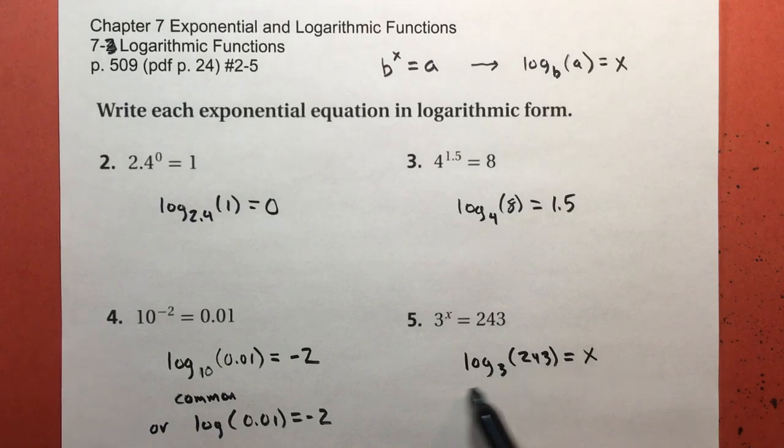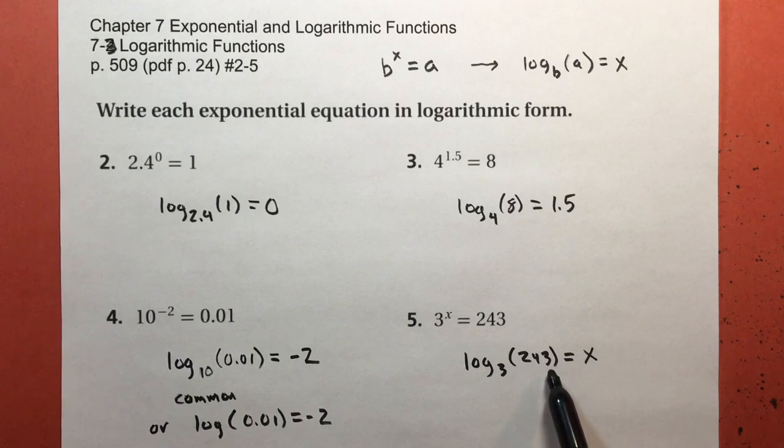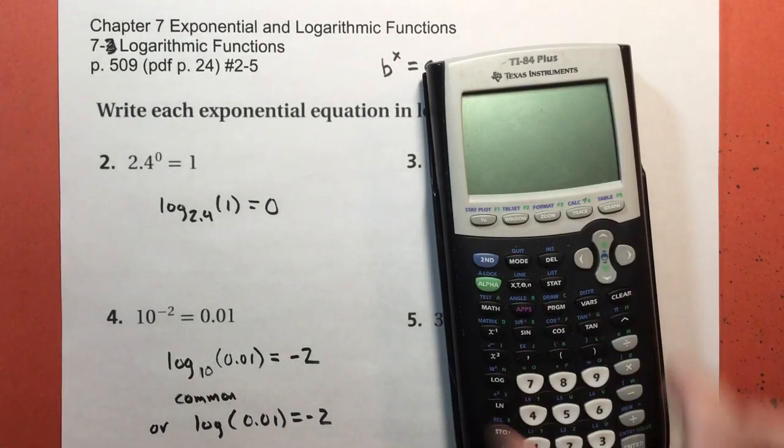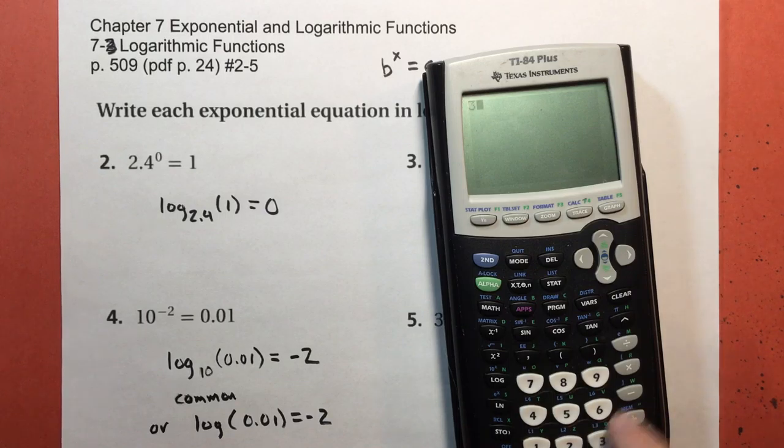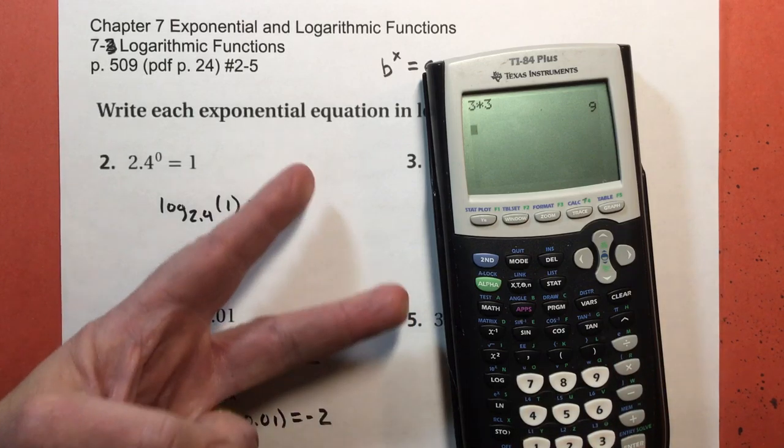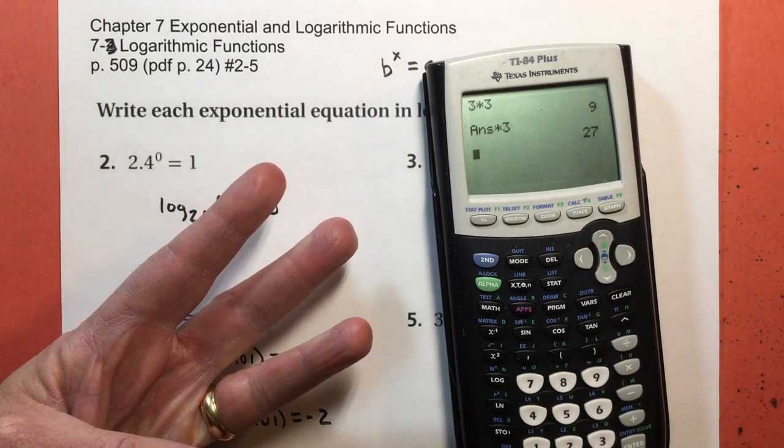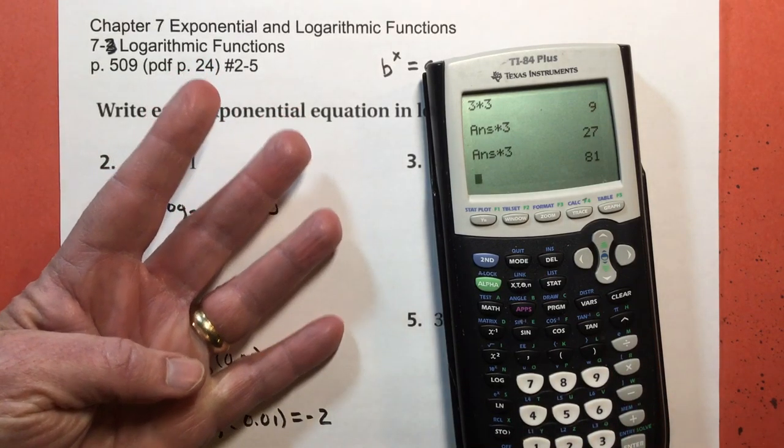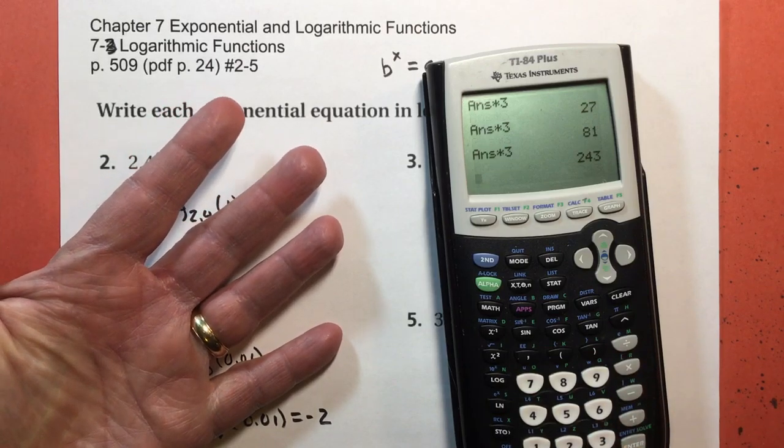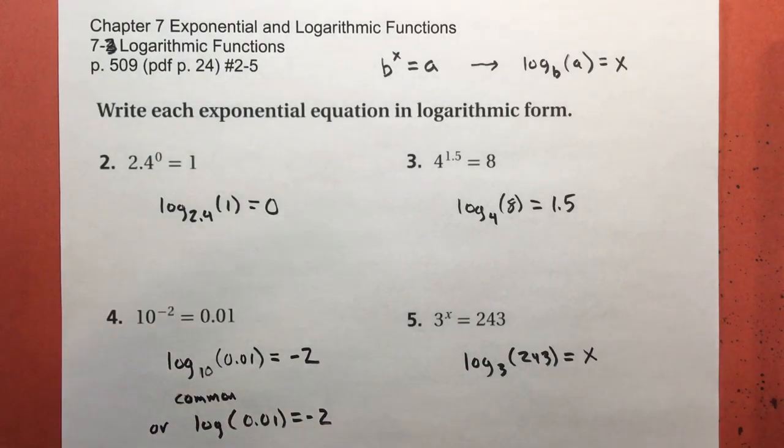If you had this as a problem, then you'd actually do this part in your head where you would say, okay, what's log base 3 of 243? You would think, okay, 3 to what power equals 243? Even if you don't have that right away, you can start doing this: 3 times 3 equals 9, that's two of them. Times 3 equals 27, that's 3 cubed. Times 3 equals 81, that's 3 to the fourth power. Times 3 equals 243. So I would get x equals 5 because 3 to the fifth power equals 243. I threw in a little extra there to get you ready for the next stuff coming up. See you in the next video.